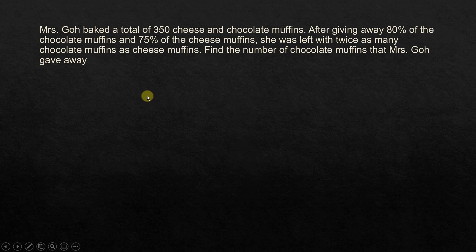If you look at this problem, you have to first find out where there is a correlation between the two items — that is, cheese and chocolate muffins. She was left with twice as many chocolate muffins as cheese muffins. When did this happen? After she gave away 80% of the chocolate muffins and 75% of the cheese muffins. So we're going to start from the last step here.